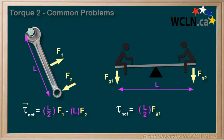Then FG2 is causing a clockwise torque at, again, half the length of the teeter-totter. So minus L over 2 times FG2.